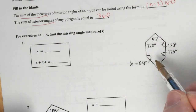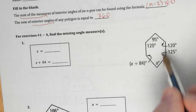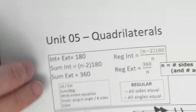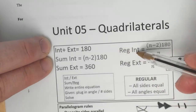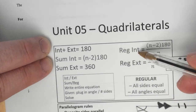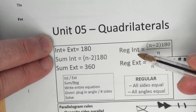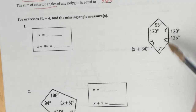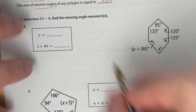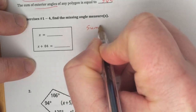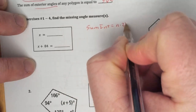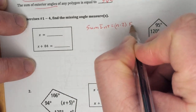So, are these interior or exterior angles? They're interior angles, so that narrows it down. The next question: is it the sum or regular? Are all these angles the same? No, so it's not regular. We're going to be using the sum of interior, which equals N minus 2 times 180 degrees.